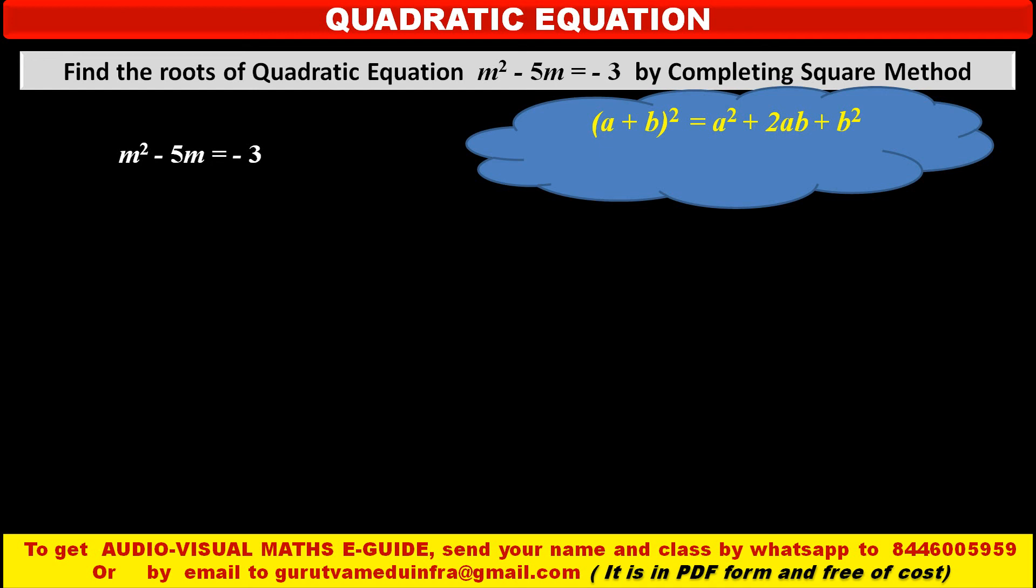Or you can rearrange the sides. Then we can write A square plus 2AB plus B square. This expansion is equal to in bracket A plus B whole square.